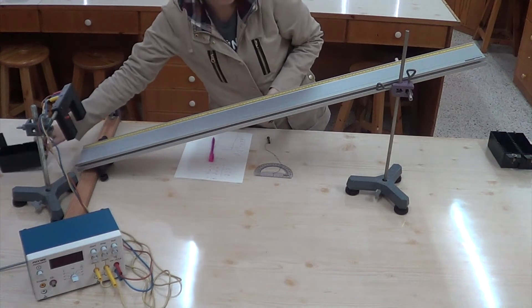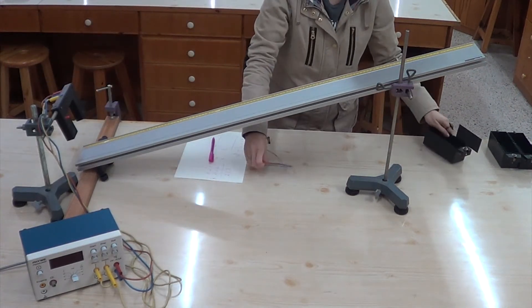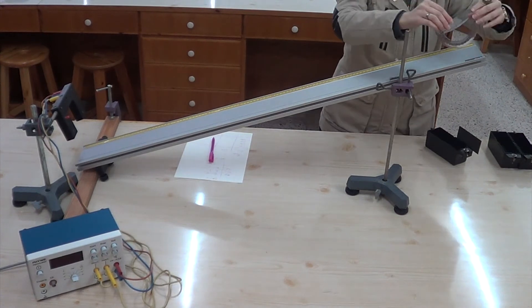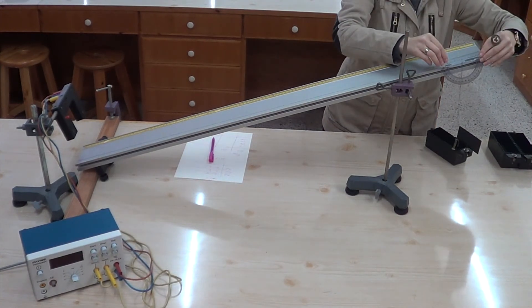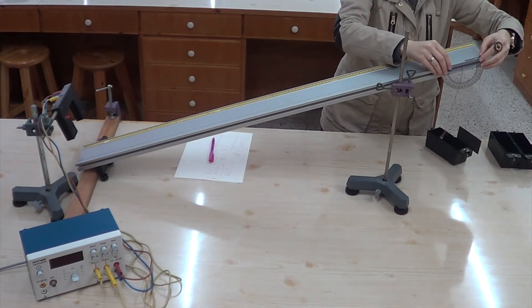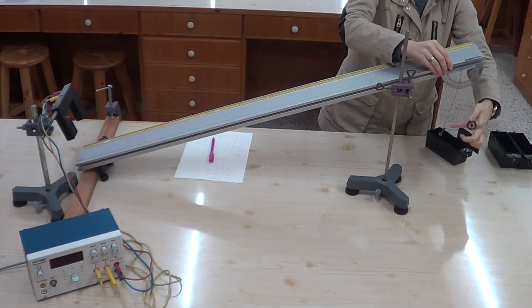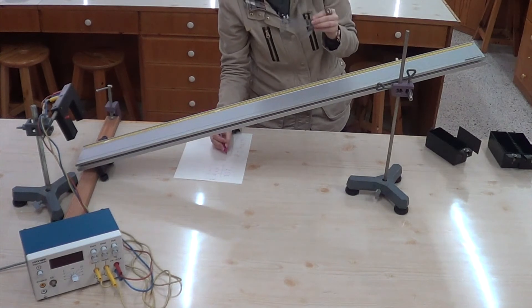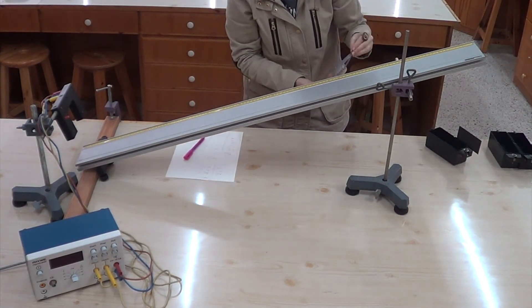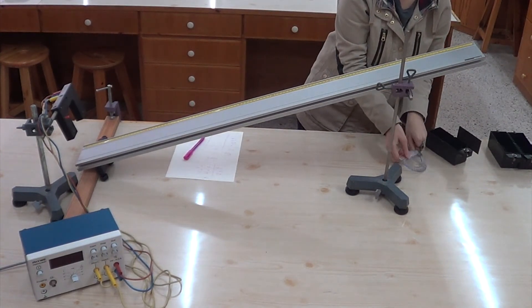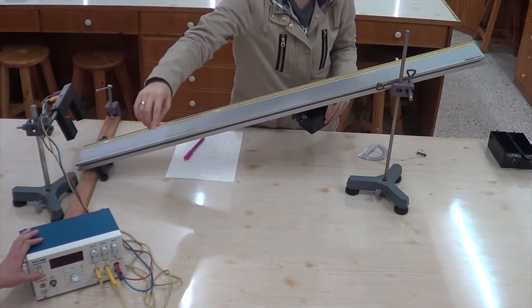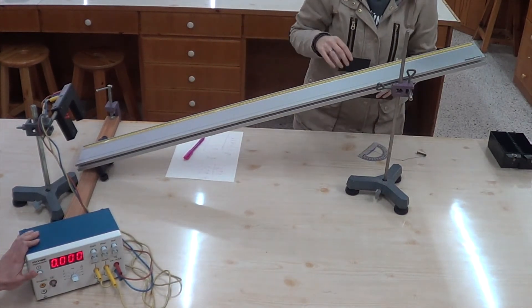Record this angle and double-check whether it has a higher value than theta critical for plastic or not. If not, you must readjust your angle. By keeping the angle fixed after this point, you may start obtaining your data.